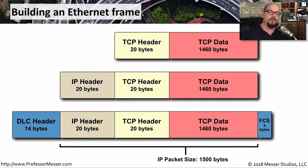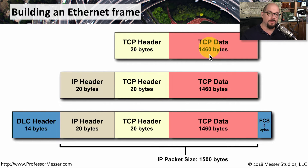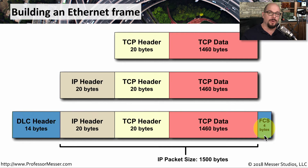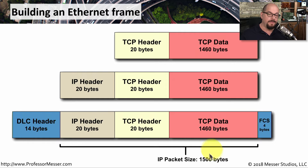Let's look at how we build an ethernet frame and how fragmentation affects this information. Let's start by sending some TCP data across the network. The maximum amount of TCP data we can send in a normal ethernet frame is 1,460 bytes, and we'll put a 20-byte TCP header on the front of that. We then need an IP header, which is another 20 bytes, and then we'll wrap ethernet around all of that, which requires an additional 14 bytes on the header and another 4 bytes for the frame check sequence. This is where we might run into problems, because now we've hit the maximum size of an ethernet frame at 1,500 bytes.